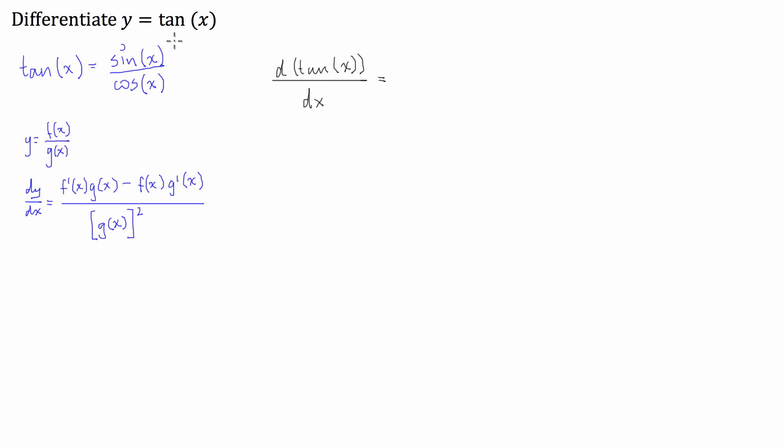the derivative of the numerator. So, the derivative of sine is cosine times the denominator. So, cosine again. Subtract the numerator which is just sine